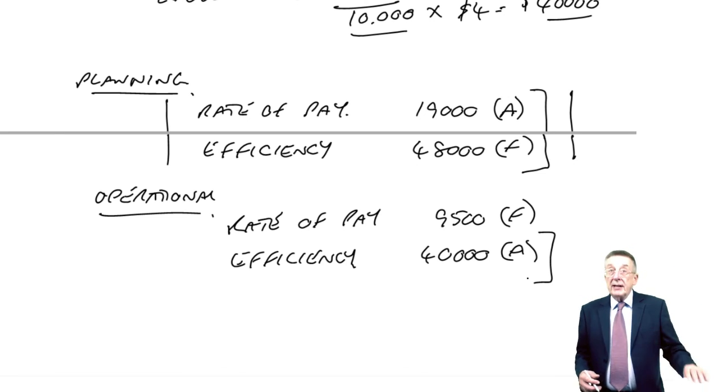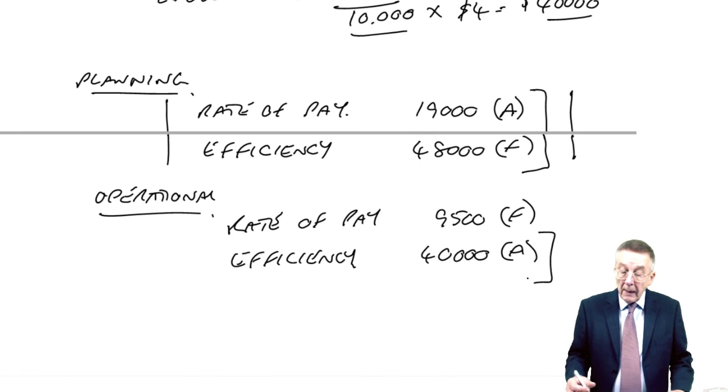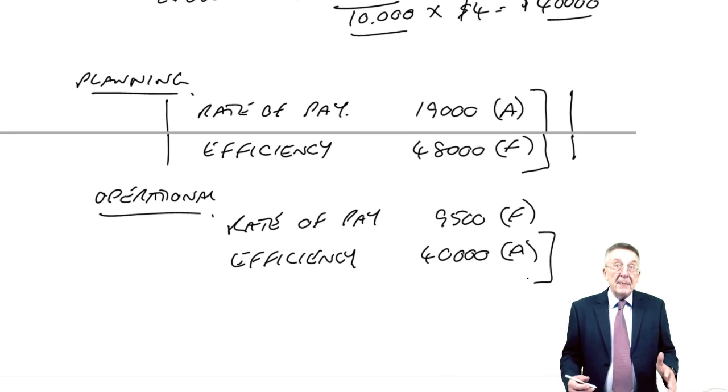Okay, well, that was the first of the, what I call advanced variances. For planning and operational, the next one we'll do is something called mixed yield.